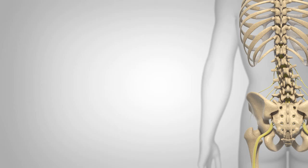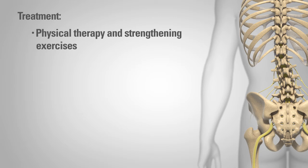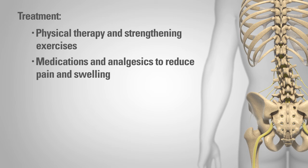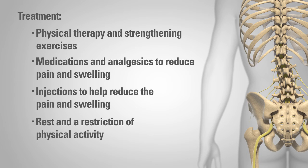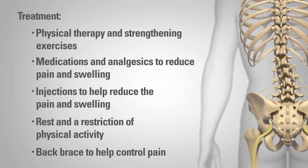If degenerative scoliosis is established as a diagnosis, your doctor may recommend one or more of the following treatments based on your individual needs: physical therapy and strengthening exercises; medications and analgesics to reduce pain and swelling, with typical medications including non-steroidal anti-inflammatory drugs; injections of anti-inflammatory and/or numbing agents directly into the affected area to help reduce pain and swelling; rest and a restriction of physical activity; and a back brace to help control pain, though it will not correct the deformity.